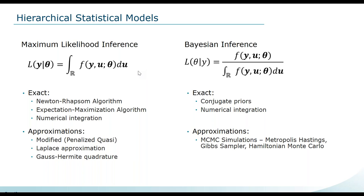In the MLE context, approximation methods include penalized quasi-likelihoods, the Laplace approximation, and Gauss-Hermite quadrature. Moving down that list improves accuracy, but Gauss-Hermite quadrature is limited to very low dimensional integrations and small random effect sizes. At higher complexity, we really only can work with the Laplace approximation or modified likelihood. In Bayesian inference, we most frequently implement MCMC simulations — Metropolis-Hastings, Gibbs sampler, or Hamiltonian Monte Carlo — to approximate the posterior likelihood.